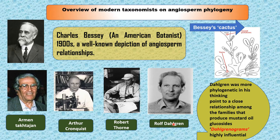Dahlgren's system of classification is based on characters drawn from anatomy, embryology, and chemistry. Dahlgren believed that none of the extant groups of flowering plants is ancestral to any present-day group, and that angiosperms are of monophyletic origin, having evolved from one particular line of gymnosperms. Among dicots, Magnoliiflorae was considered most primitive, and among monocots, Alismatiflorae was regarded as most primitive. Dahlgren was more phylogenetic in his thinking, and his concept of Dahlgrenograms was highly influential.